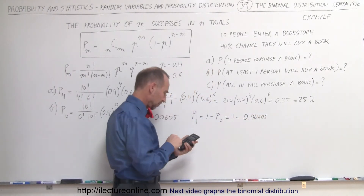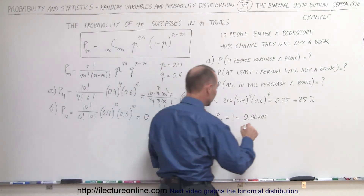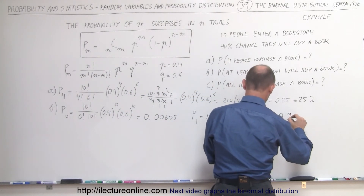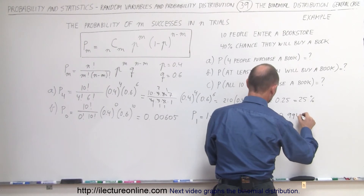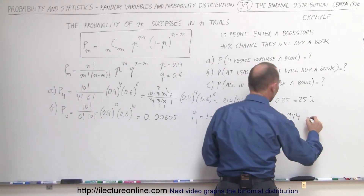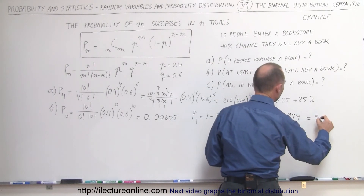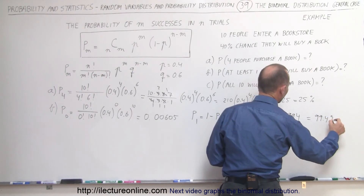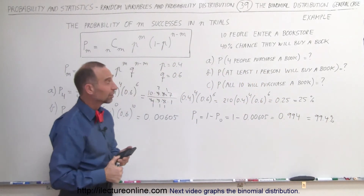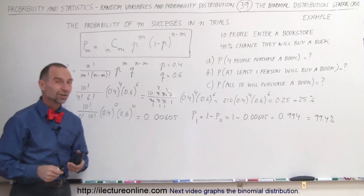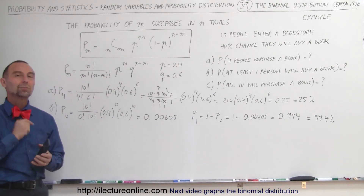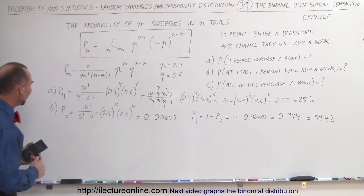Therefore, the probability that at least 1 person will purchase a book equals 1 minus 0.00605, which is 0.994, or 99.4%. So when 10 people walk into the store, there's a 99.4% chance that at least 1 person will purchase a book.